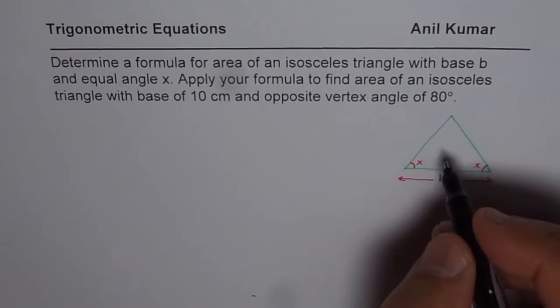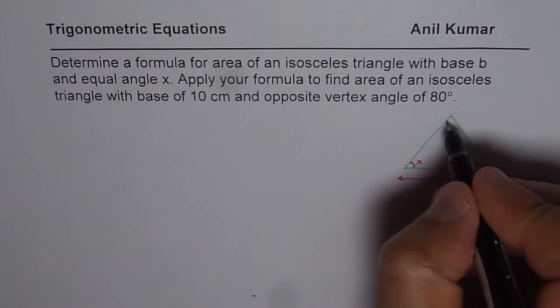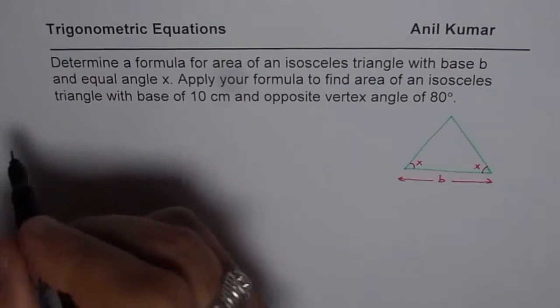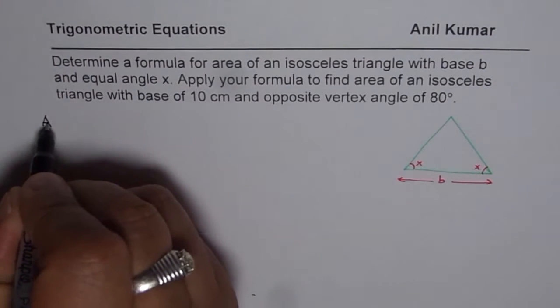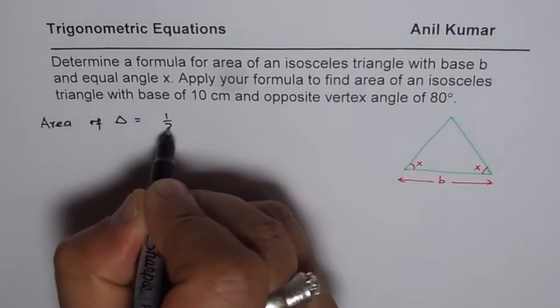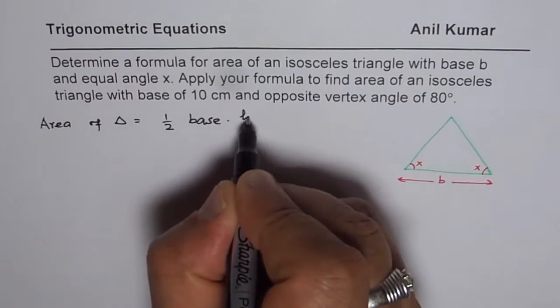So in the first part let us find the area of this particular triangle. Now what is area of a triangle? Area of a triangle is half base into height. So area of a triangle is basically half base times height.